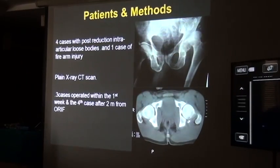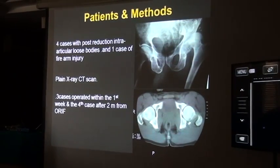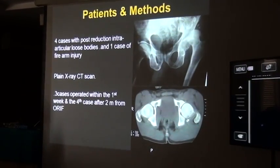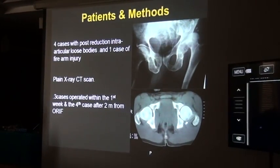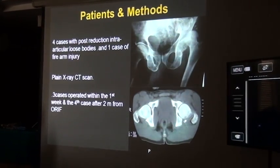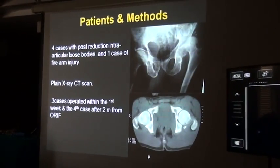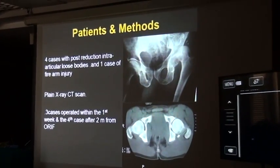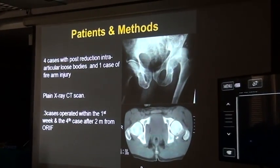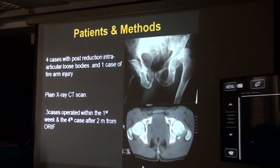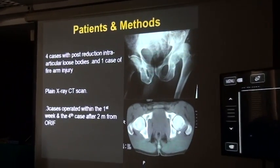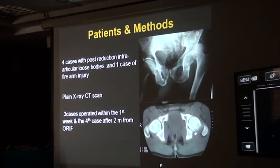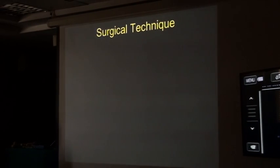In our series, we performed five cases of hip arthroscopy after traumatic dislocation — specifically four cases after traumatic dislocation and one case after a firearm injury. Plain X-ray and CT were done for all patients. Four cases were operated within the first week, and the fifth case was addressed two months after open reduction and internal fixation.